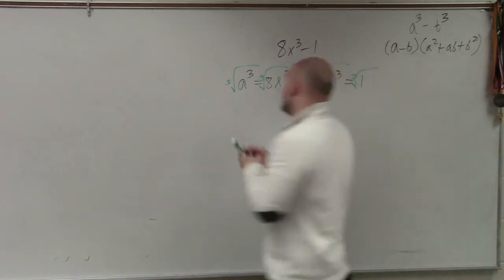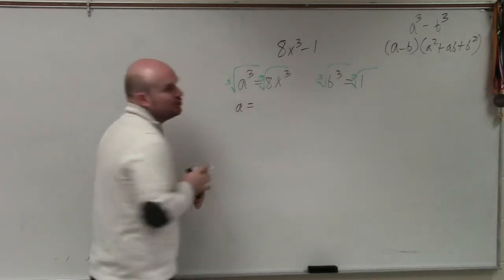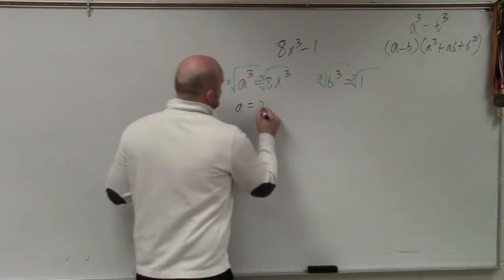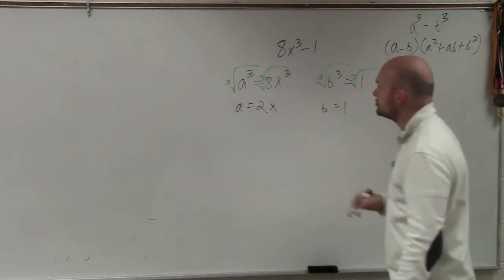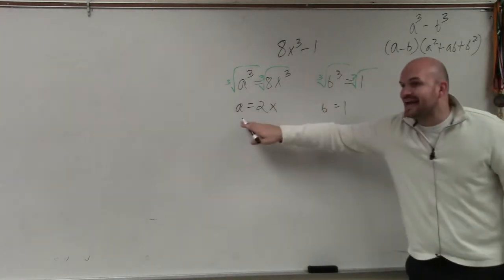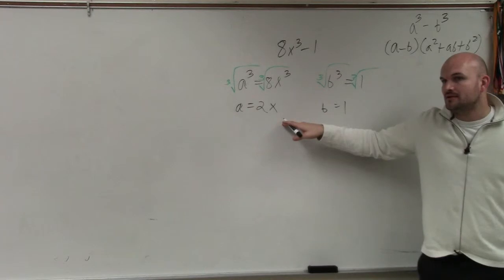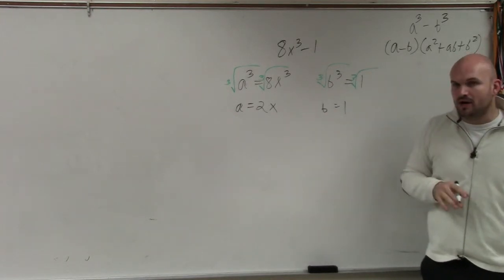So by taking the cube root, I get a equals the cube root of 8 is 2. The cube root of x cubed is x. The cube root of 1 is obviously just 1. So now I know a is 2x, and b is equal to 1.